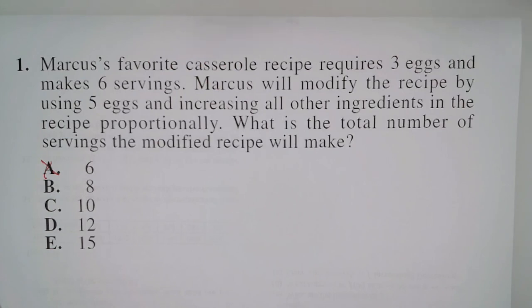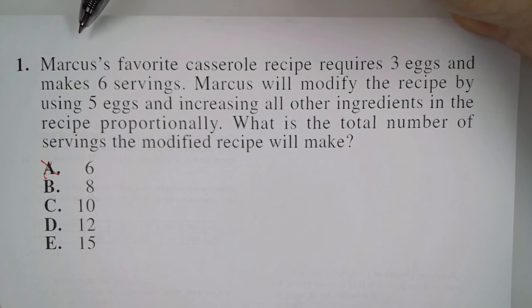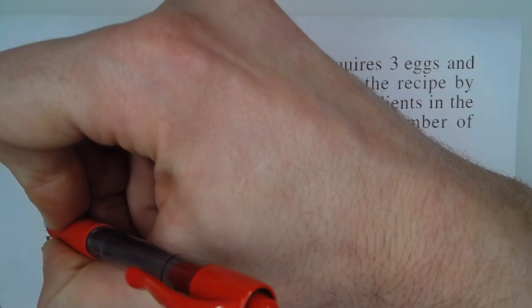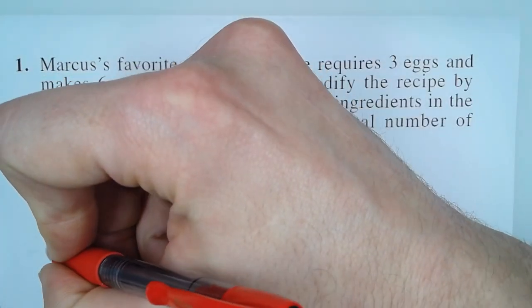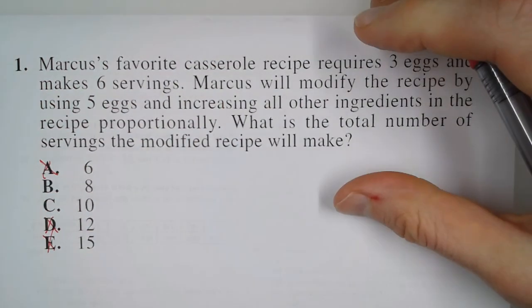Now, what if instead of five eggs, he used six eggs? If he used six eggs, that's basically two of these recipes, which would mean that he would have twice as many servings, which means he would get 12. But we know it's not six. It's not quite that. Six is too big. And so that means D and E are also incorrect.